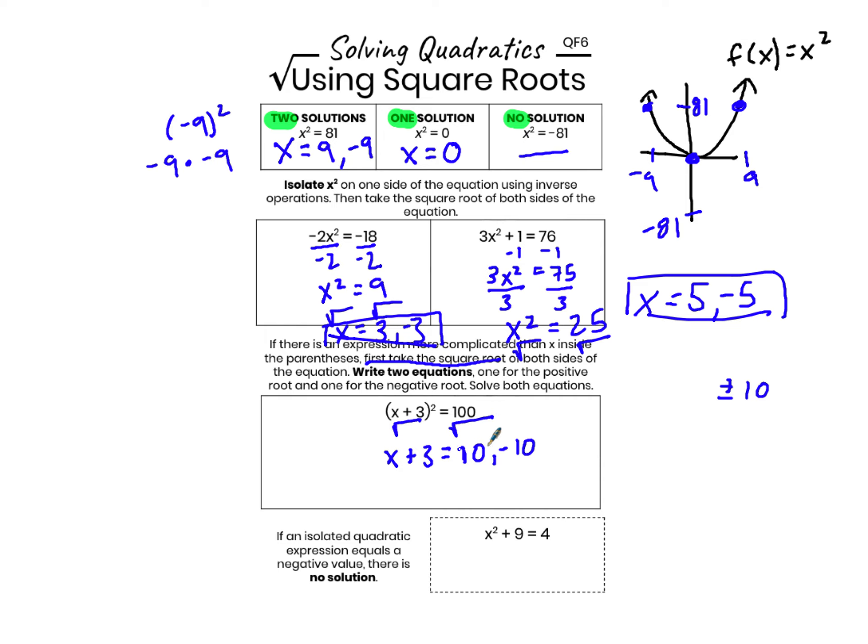There are two different solutions here, but I am not done. I need to write two different equations, one for the positive root and one for the negative root. So I'm going to need to solve both of these equations. x plus 3 equals 10, as well as x plus 3 equals negative 10. One corresponding to the positive square root of 100, one corresponding to the negative square root.